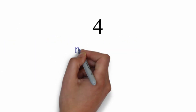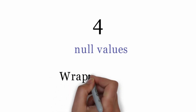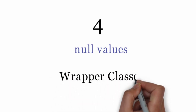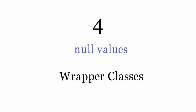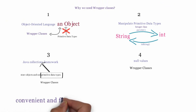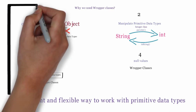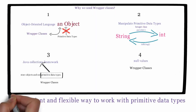Fourth reason is: wrapper classes allow us to use null values with primitive data types. Primitive data types cannot have null values. However, wrapper classes can have null values, which can be useful in certain situations. Overall, wrapper classes provide a convenient and flexible way to work with primitive data types in Java. Hence, wrapper classes are needed in Java.